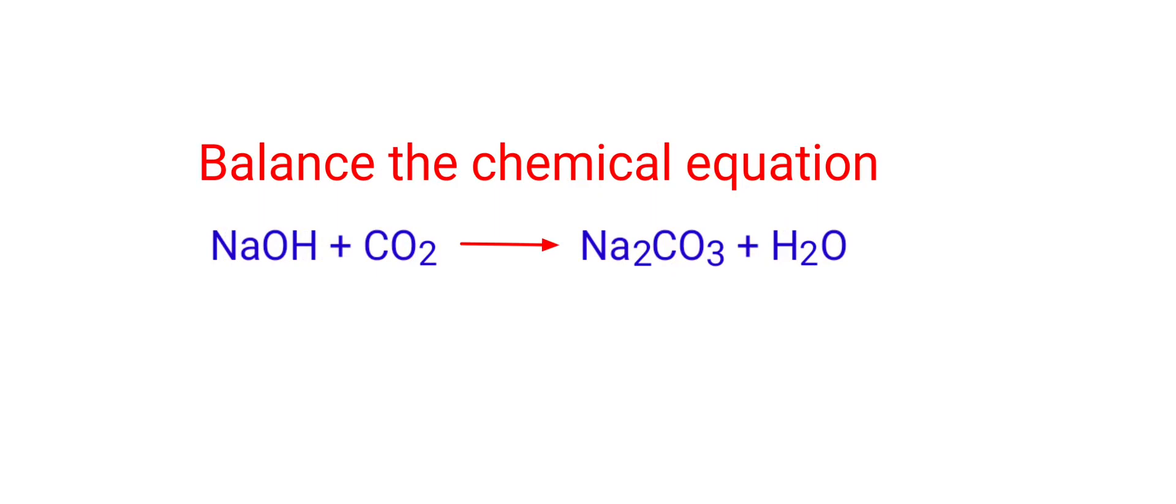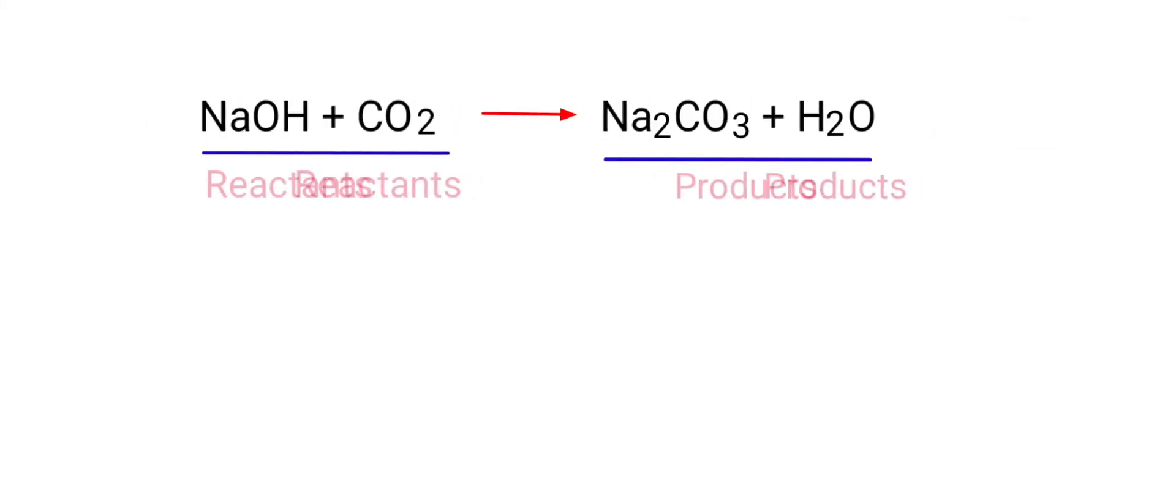Balance the chemical equation. Sodium hydroxide plus carbon dioxide gives us sodium carbonate plus water. In this equation, the reactants are sodium hydroxide and carbon dioxide, and the products are sodium carbonate and water.